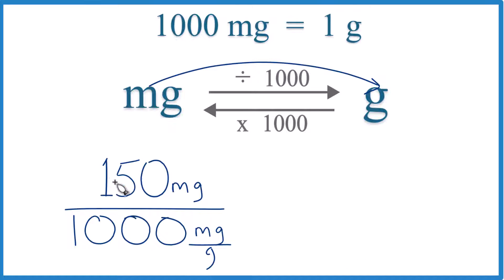So really, all we're doing is dividing 150 by 1,000. But if you look at the units, we have our milligrams here, and on the bottom, we have 1,000 milligrams per gram. That's the conversion factor. So milligrams on top and bottom, they cancel out. We're left with grams, and that's what we're looking for.